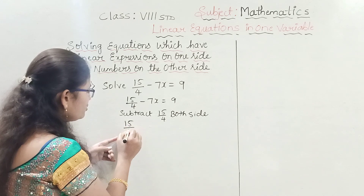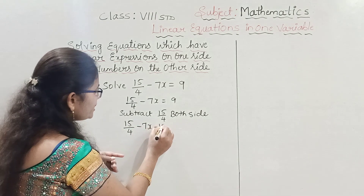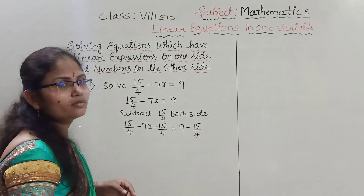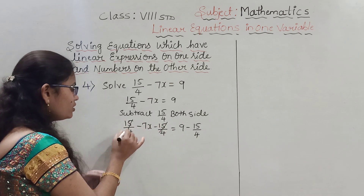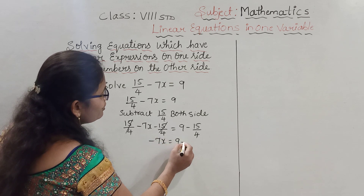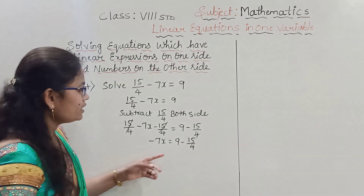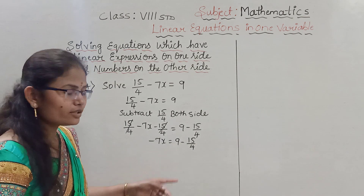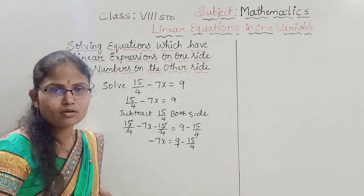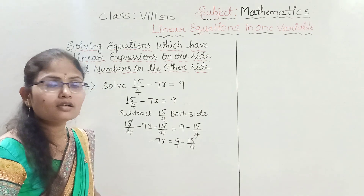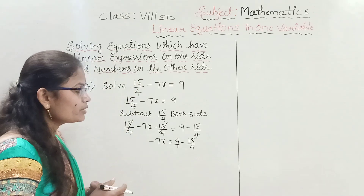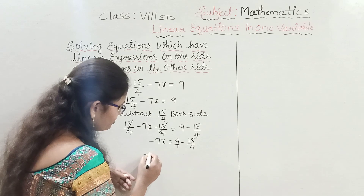So: 15 by 4 minus 7x minus 15 by 4 equals 9 minus 15 by 4. The plus and minus 15 by 4 cancel on the left. What remains is minus 7x equals 9 minus 15 by 4. Now we simplify the RHS. The denominators are not equal, so we take the LCM of 1 and 4, which is 4.